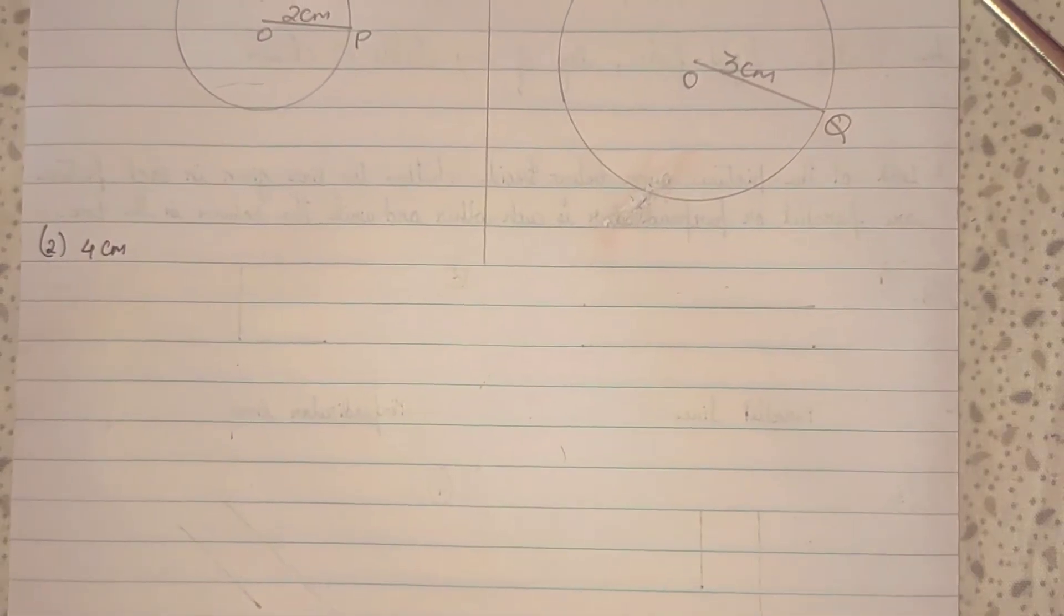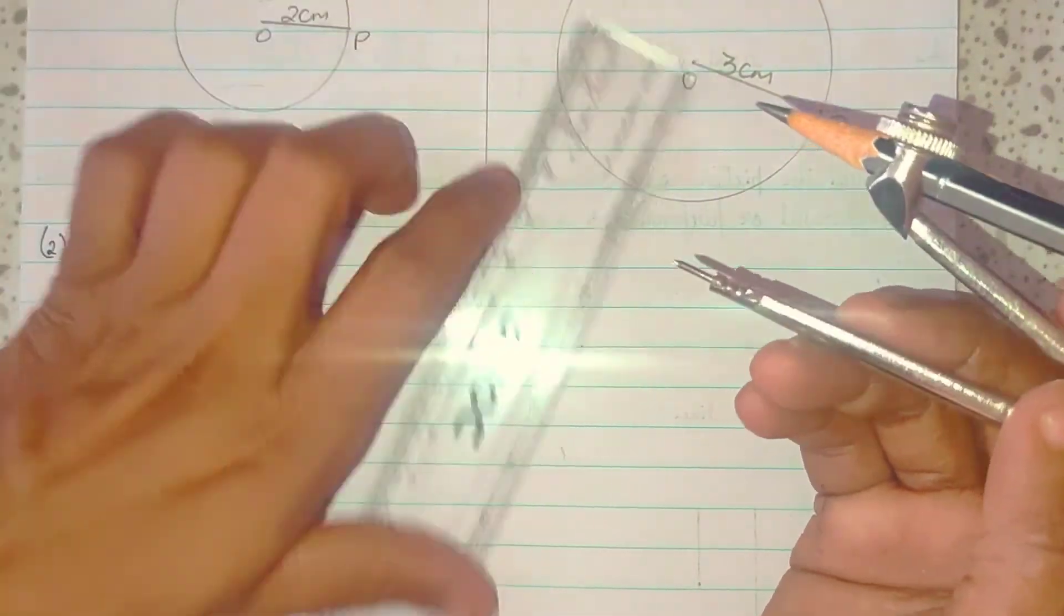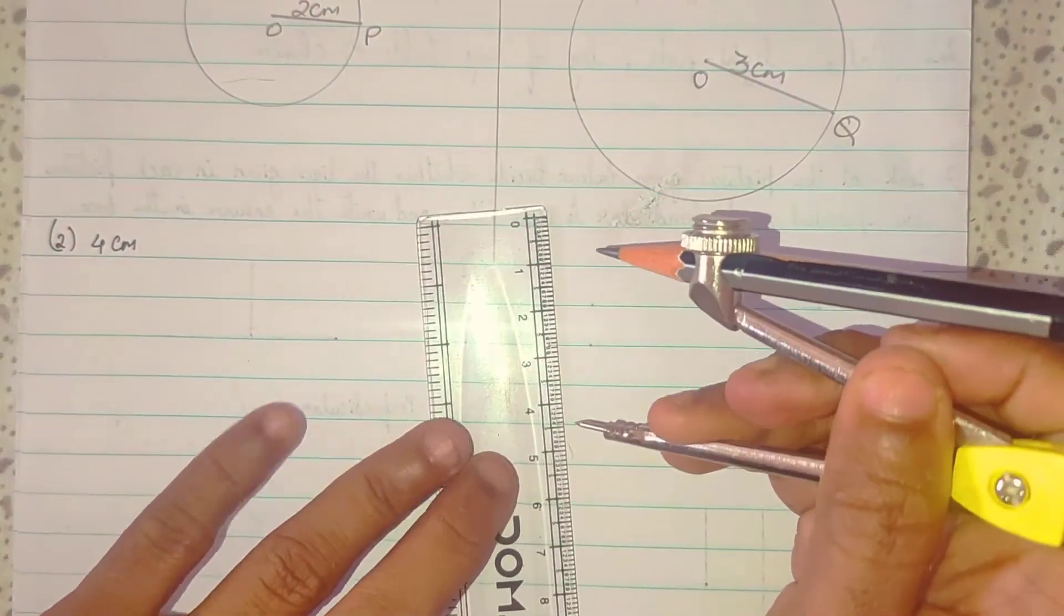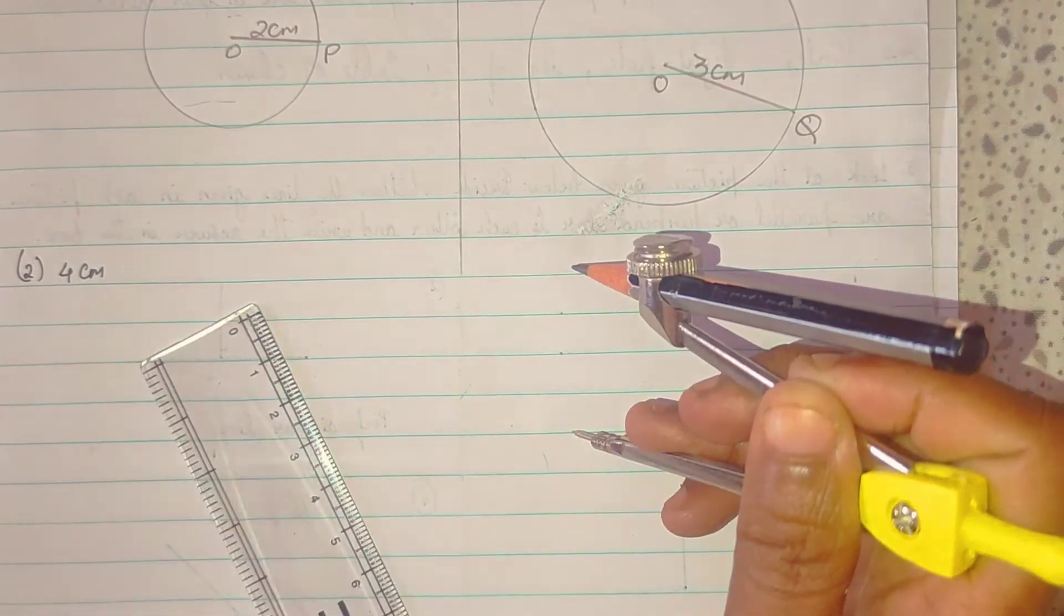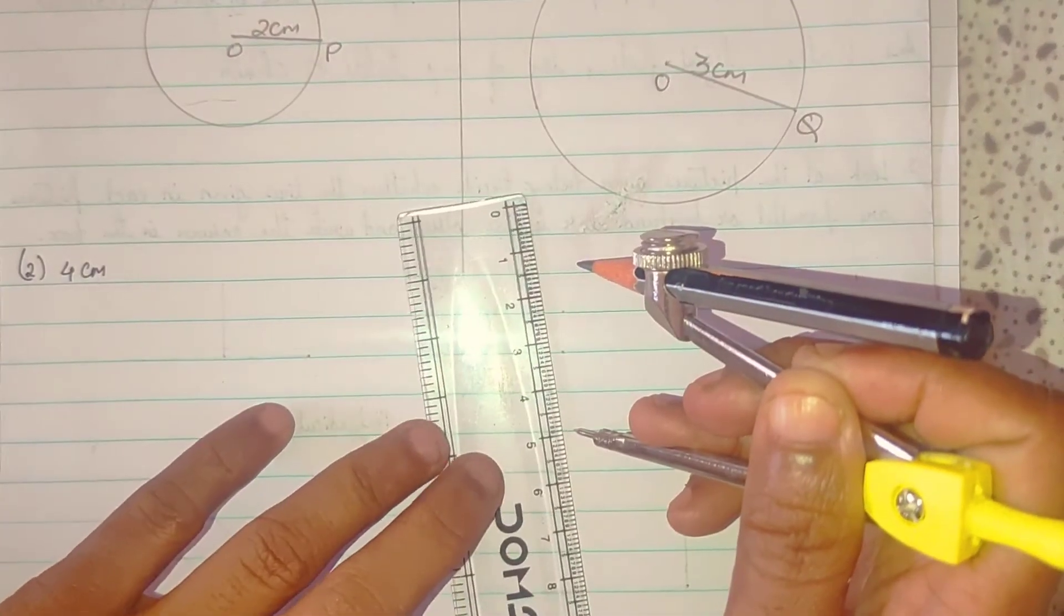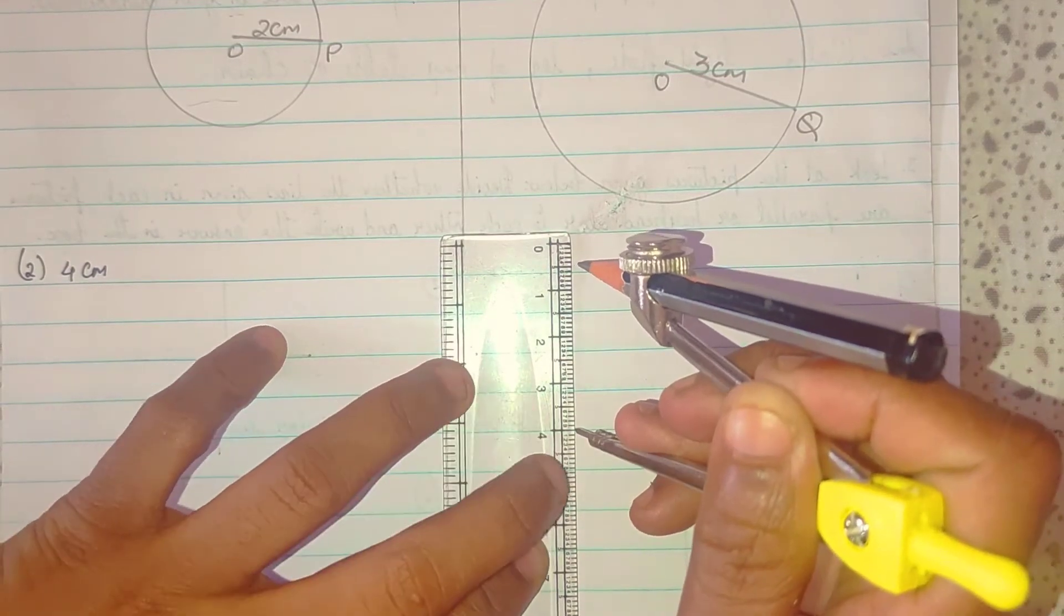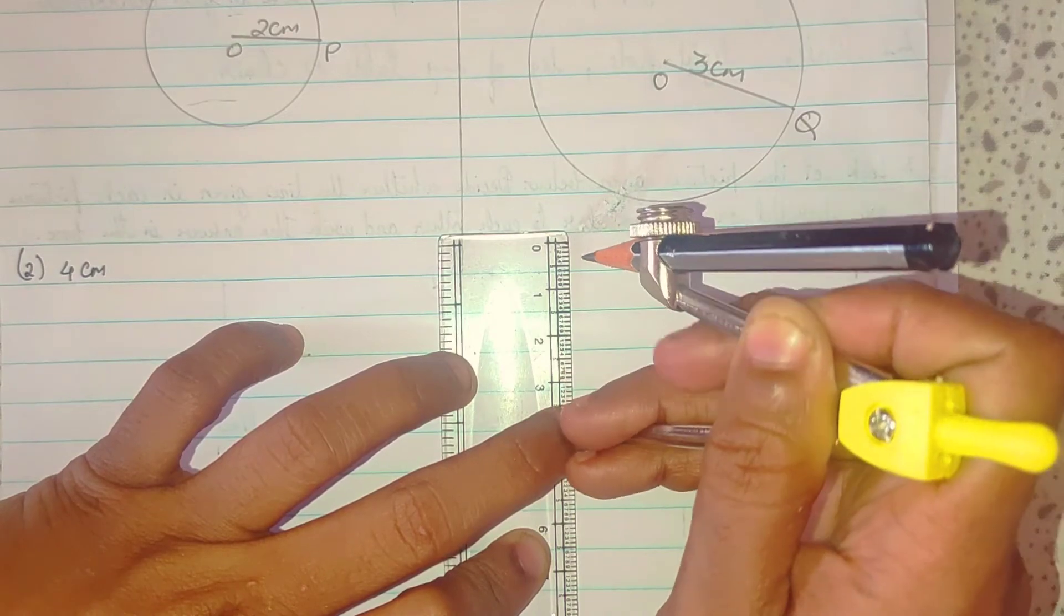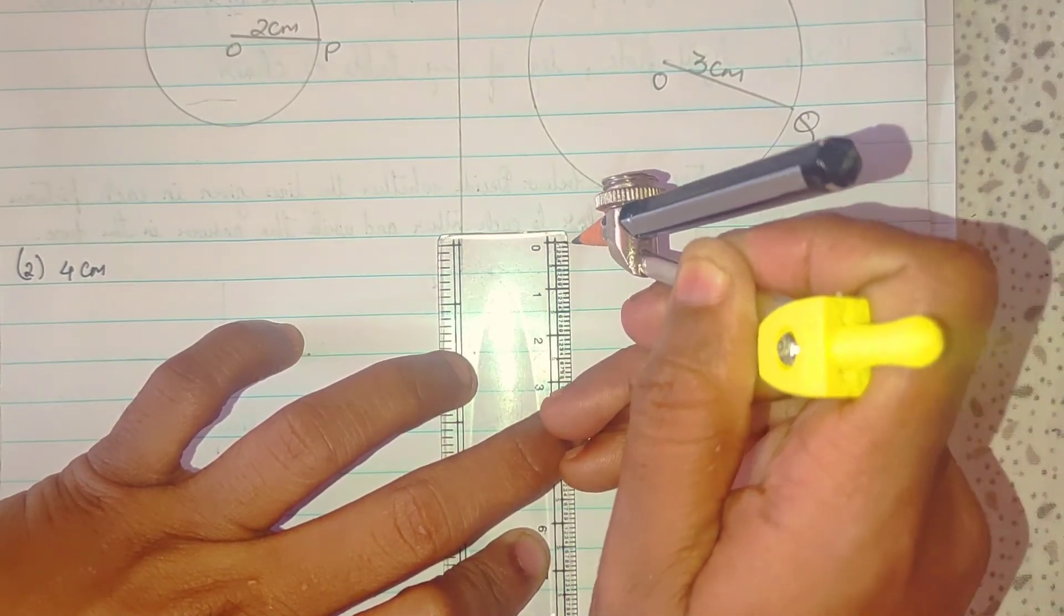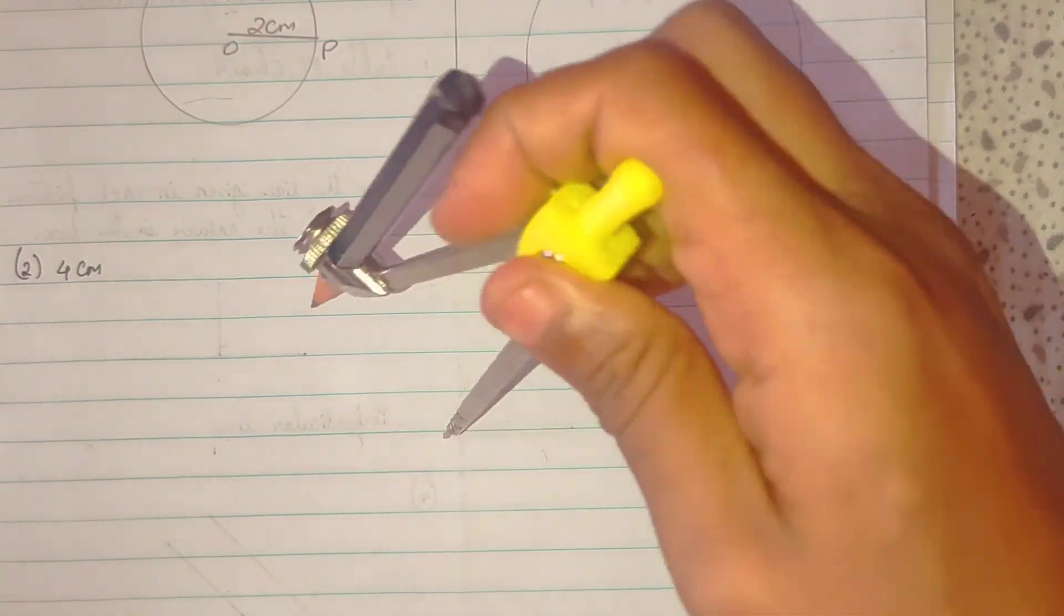Now, let's see 4 centimeter. Again, take a ruler. Take any line. In that line, keep your compass tip. And then, take 4 centimeter over that tip. Then, you go to 0 centimeter. So, see, 0 to 4, 4 centimeter.